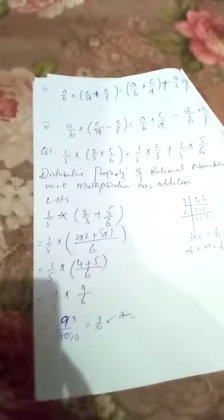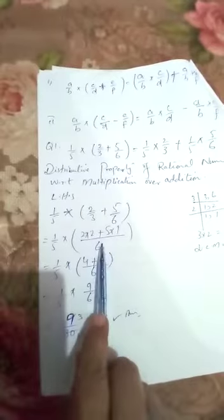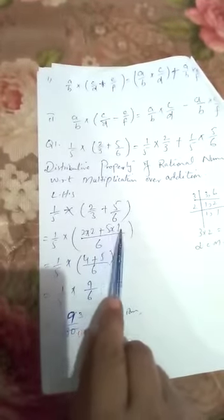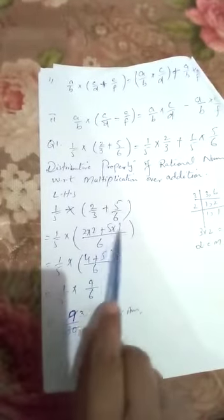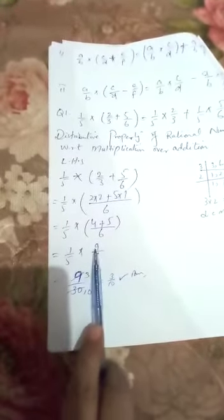So 6 is divided with 3. The quotient will be 2 which is multiplied with 2. Now sign of plus. After this 6 will divide with 6, we get 1 and multiply with 5. Now 2 times 2 is 4, plus 5 times 1 is 5. Here 4 plus 5 is equal to 9 by 6.